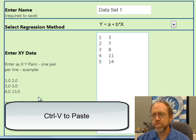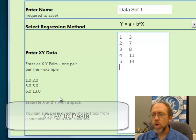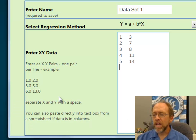If you read the information in the text box, it simply says enter the data as x, y pairs, one per line. So that's what I've done, x, y pairs, one per line.